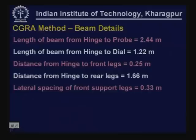The salient features of the Benkelman beam are: length from hinge to probe point is 2.44 meters; from hinge to dial gauge is 1.22 meters; distance from hinge to front legs is 0.25 meters; distance from hinge to rear legs is 1.66 meters; and the lateral spacing between the two front legs is 0.33 meters.